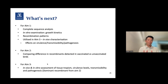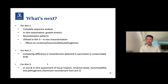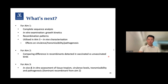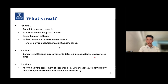For what's next in the project: for aim one, the plan is to complete sequence analysis of the isolated viruses, examine them in vitro looking at growth kinetics and recombination patterns, and then utilize them in aim three. For aim two, the goal is to compare the difference in recombinants detected in vaccinated versus unvaccinated birds. For aim three, there will be in vivo and in vitro assessment of tissue tropism, virulence level, transmissibility, and pathogenicity using the dominant recombinants from aim two.